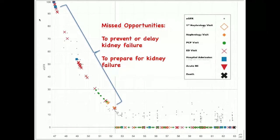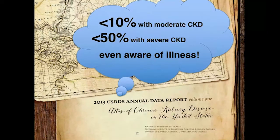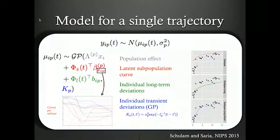Forty-two percent of people start dialysis having had no prior nephrology care, and less than 10% of people with moderate chronic kidney disease, and less than half of people with severe chronic kidney disease, are even aware that something is wrong with their kidneys. What we really wanted was to look back at this person's course of chronic kidney disease — you can see a function where his kidney functioning is getting worse and worse — and use that to predict that he's going to end up needing dialysis.